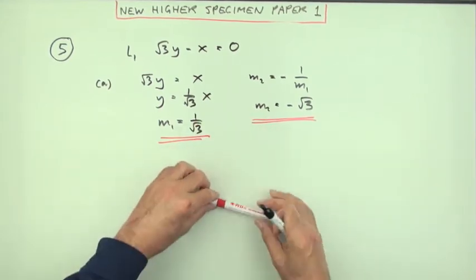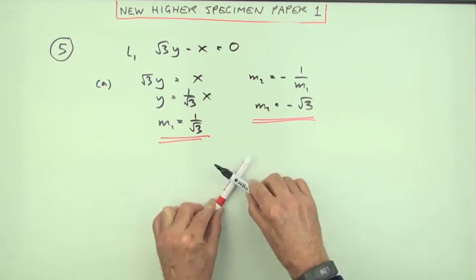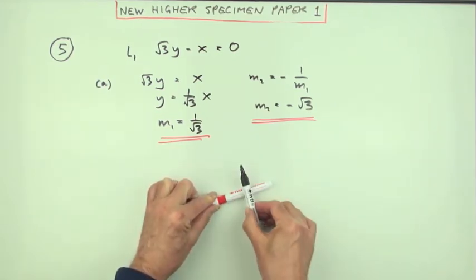But that's simply because if one line slopes up, its perpendicular one must slope down, and if one line's shallow, the other one must be steep.